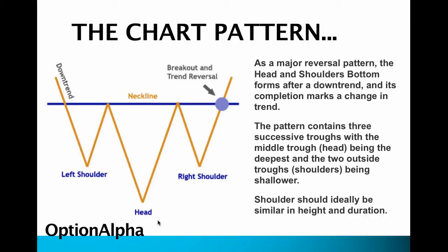But then, once it reaches this bottom apex, it starts coming back up to the exact point it reached the neckline previously. Now we have an established neckline — an area of relative or intermediate resistance. What really sets the basis for a huge breakout is the right shoulder. After the stock has come off the lows, it comes back down and establishes a right shoulder, which is virtually even with the left shoulder. Now the stock that was in a downtrend making lower lows and lower highs is starting to make higher lows and possibly higher highs — it's almost a U-shaped pattern at the bottom.